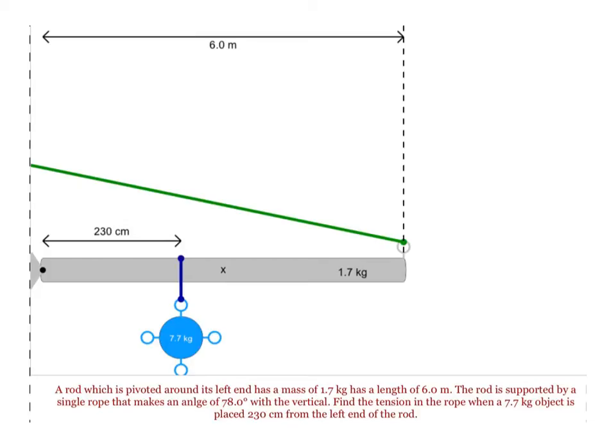To find the tension in this green rope, what we want to do is first start at our pivot point, and then calculate how much torque is created by both the rod and the hanging mass.